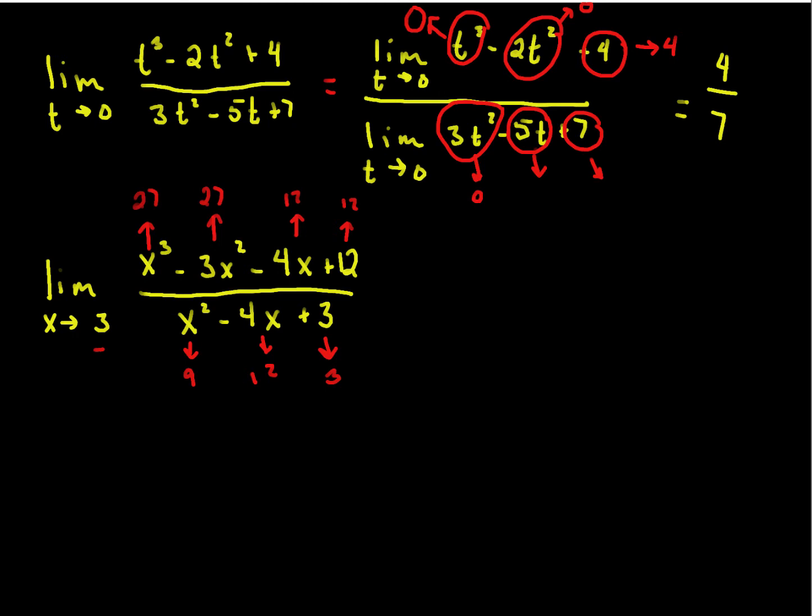So, putting that together, we get that the top is 27 minus 27 minus 12 plus 12, that's 0. And the bottom is 9 minus 12, which is minus 3, plus 3, which is 0.